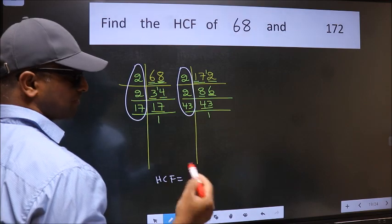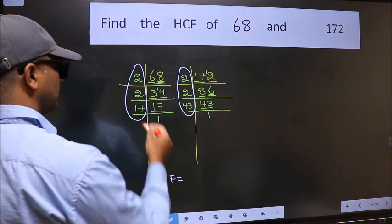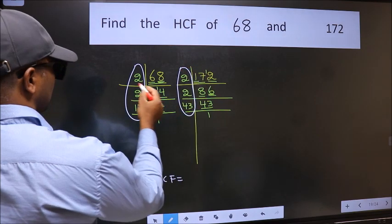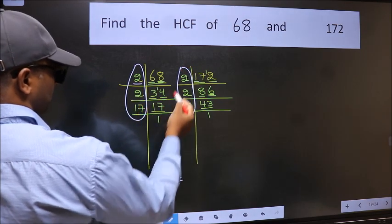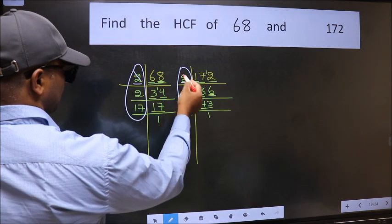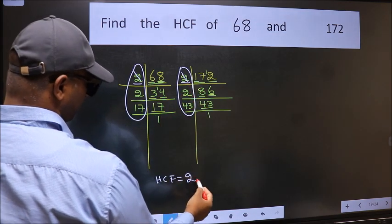So now let us find the numbers which should be present here and here. Starting with the number 2. Do we have 2 here? Yes. So cut 2 right here.